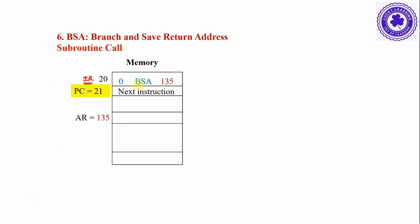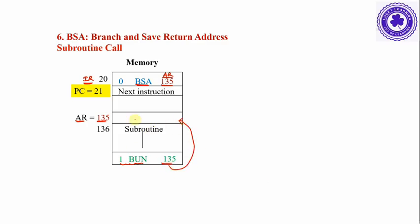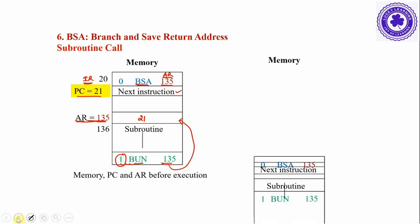Assuming the 20th instruction is a subroutine call targeting the function at location 135, that 135th address is copied into the AR register. The AR register now points to 135. From location 135 the subroutine begins, and at the end of the subroutine there is an indirect BUN. When the subroutine completes, it should jump back to location 135, where the return address 21 has been stored, so the PC is updated back to 21 to continue with the next instruction.